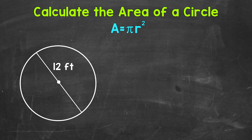With that being said, let's jump into our example where we have a circle with a given diameter of 12 feet. The first thing I'm going to do is write out the formula for the area of a circle: area equals pi r squared.